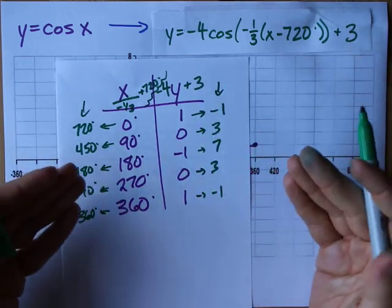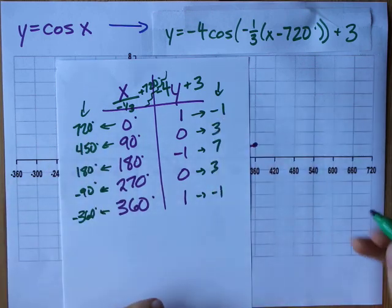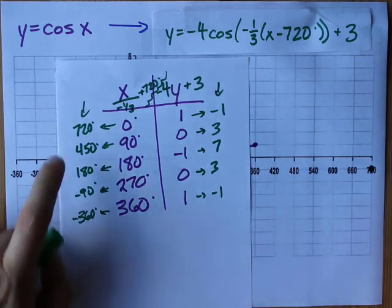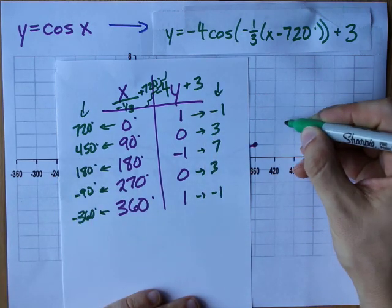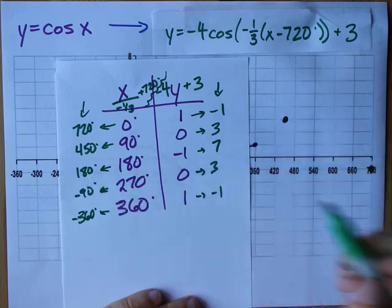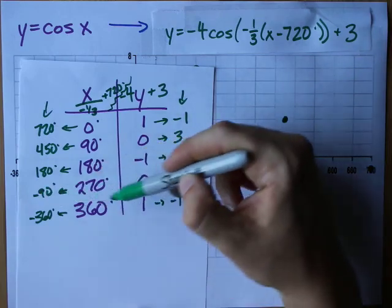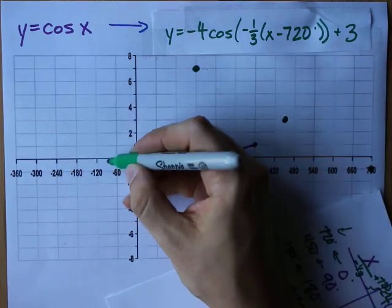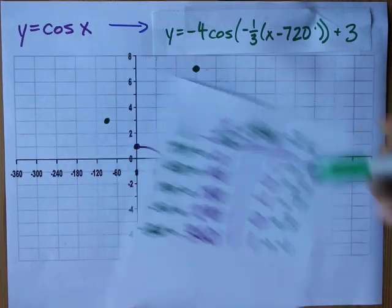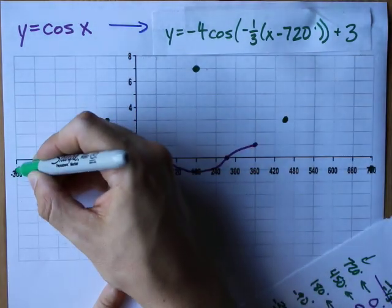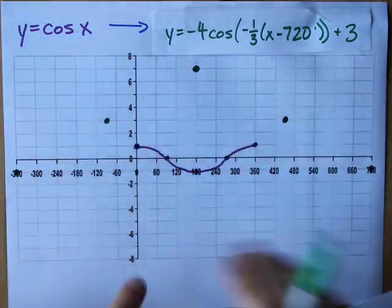This is a new table of values that I can plot to get my new points: (720, −1), (450, 3) — 450 is somewhere in here, 3 is up here — (180, 7), (−90, 3), and (−360, −1). Those are at the same height, and these are at the same height. It looks kind of symmetrical, which is good.